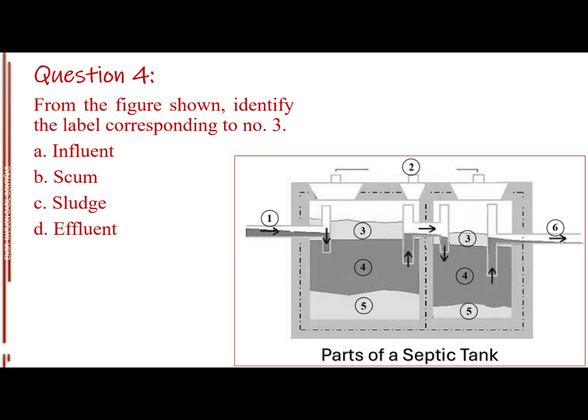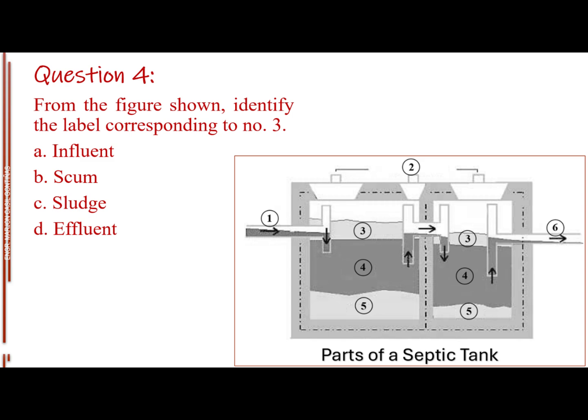Question number 4. From the figure shown, identify the label corresponding to number 3. Letter A, influent. Letter B, scum. Letter C, sludge. Letter D, effluent. The answer is letter B, scum.